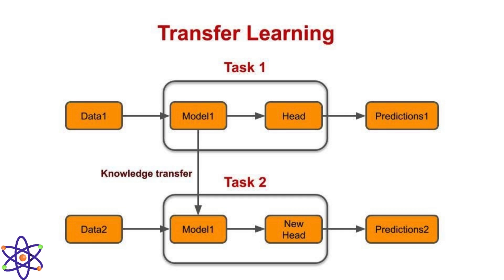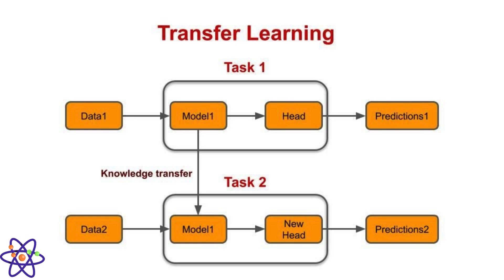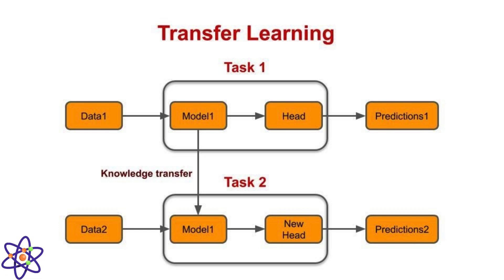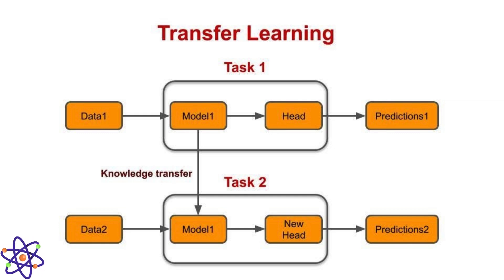Transfer learning involves pre-training a neural network on one task and then fine-tuning it on a different but related task, leveraging knowledge gained from one domain to improve performance in another. Transfer learning is crucial for scenarios where labeled data is limited. Pre-trained models, such as those trained on large image datasets, can be fine-tuned for specific applications, reducing the need for extensive labeled data. These key concepts contribute to the power and versatility of deep learning, enabling advancement across various domains.